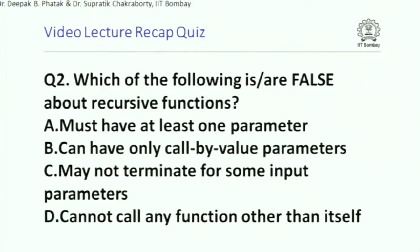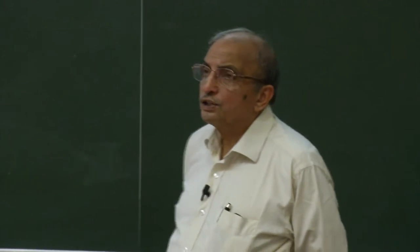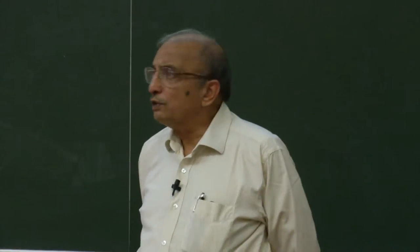The next recap quiz: which of the following are false about recursive functions? One or more may be false, so please read them carefully. Choice A: must have at least one parameter. Choice B: can have only call-by-value parameters. Choice C: may not terminate for some input parameters. Choice D: cannot call any function other than itself.